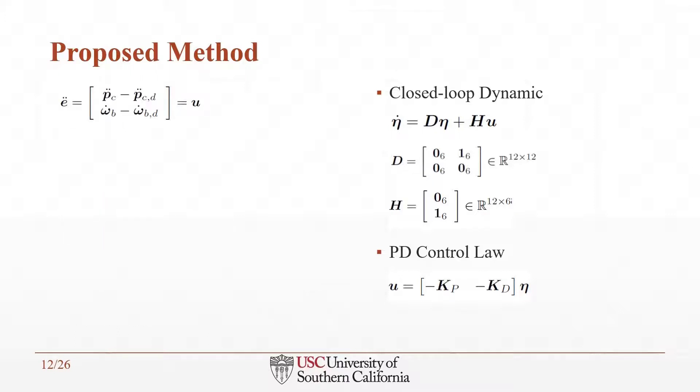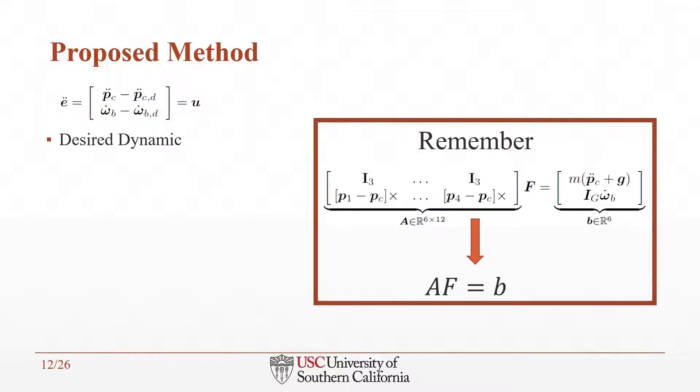First, from the closed loop error dynamic, we know that E double dot is equal to the control input U. If you remember from the previous slide, we described the simplified dynamic of the robot as AF equal to B, which B represents a combination of robot acceleration. By rewriting the B vector in this form, we can obtain the desired dynamic vector as a function of control input U.